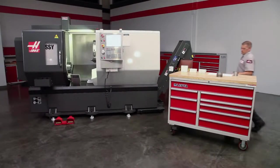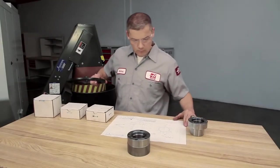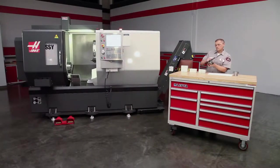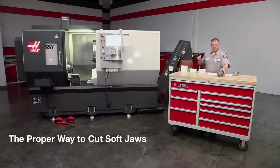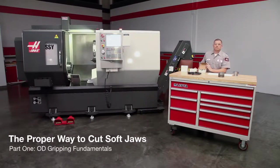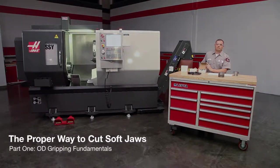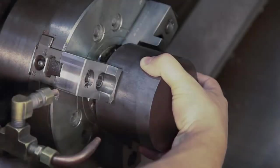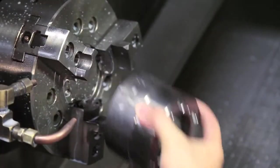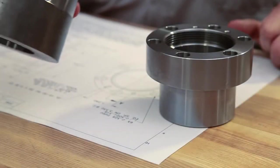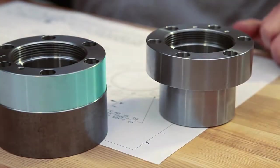Today we are joined by Andrew, one of our Haas certified technicians. In this video we will demonstrate the proper way to cut OD gripping soft jaws and cover soft jaw fundamentals. The first side of this bearing housing has been completed. We will show you our recommended soft jaw cutting methods as we make the jaws to hold the finished first side of this part.